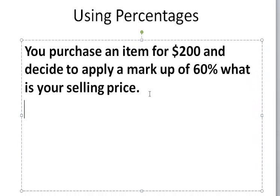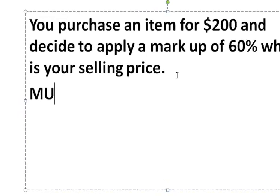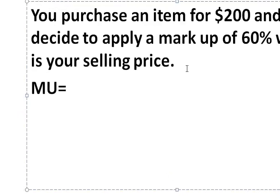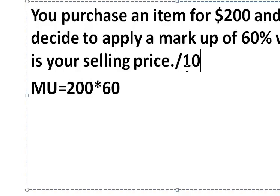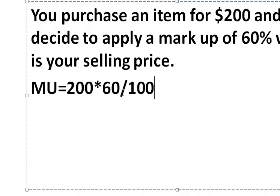First step, stage one: calculate markup. Let's call markup MU. So MU equals 200 times 60%. Now 60% is actually 60 over 100. You could just multiply by 60% and work your calculator through that — 200 times 60 divided by 100 — or you can just see it's 60 times 2.